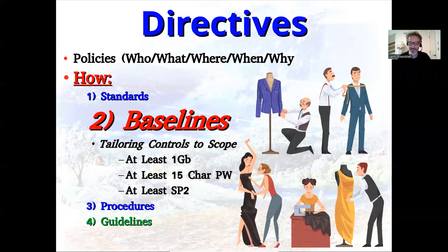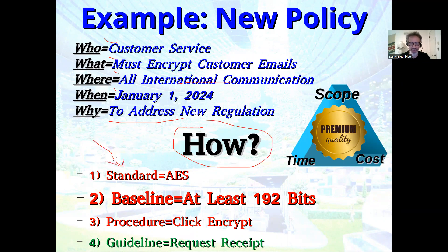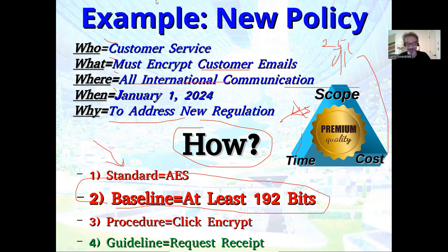For instance, let's say there's a new policy, and the policy says: who — customer service; what — you must encrypt all customer emails; where — all international communication; starting when — January; why — some new regulation. But how are you to do that? I have to first pick a standard. AES comes in small, medium, and large — it comes in 256, 192, and 128. I have to figure out what I need — that's the baseline. If I get 128, it's not going to meet the scope. We never short scope. If I put in 256, it'll work but it'll go out of scope, probably taking more time and costing more money. I'd like to get exactly 192. And if you know anybody that gives you a TLS handshake with 192, I usually have to go out of scope — but that's another story.